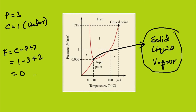This equals 0 at the triple point. This indicates that the triple point is already a defined state — we no longer need any independent intensive variables to define it. At the triple point, the pressure is 0.006 atmosphere and the temperature is 0.01 degrees. Hence, it is a fixed state and cannot be altered, so the degrees of freedom is 0.